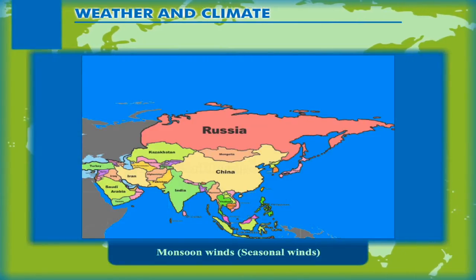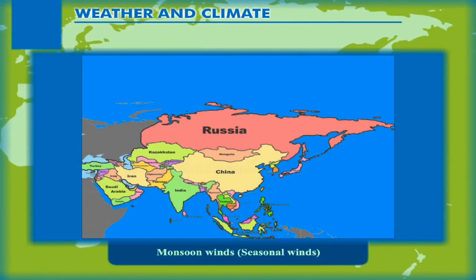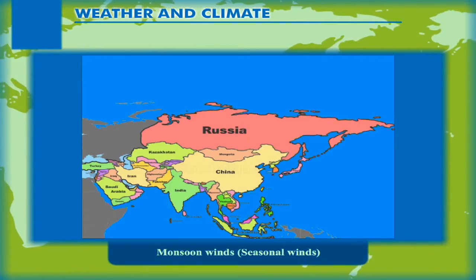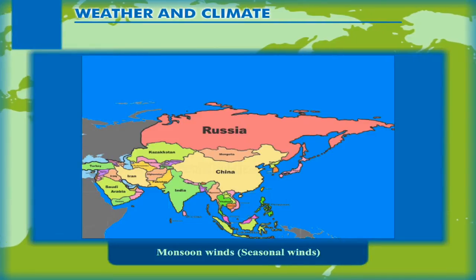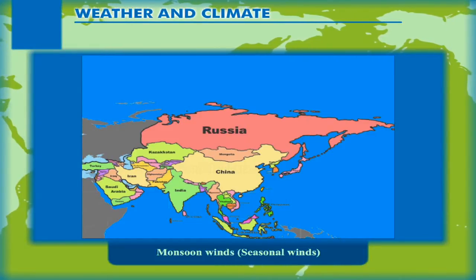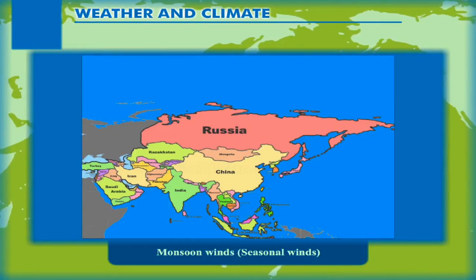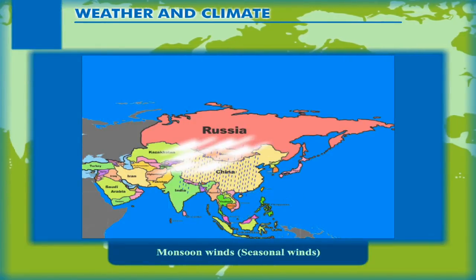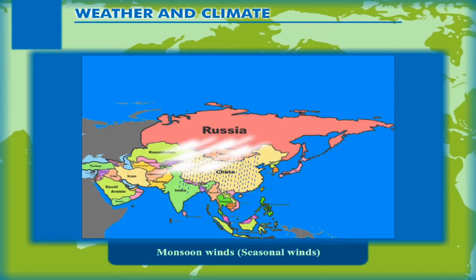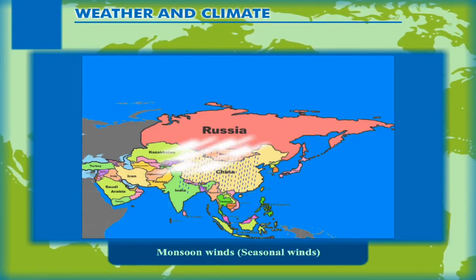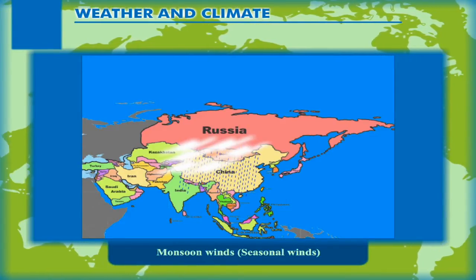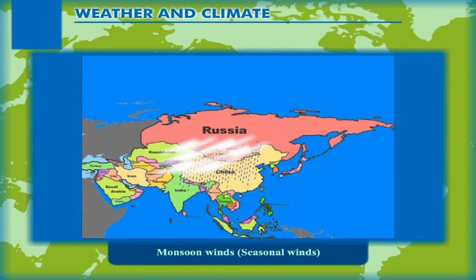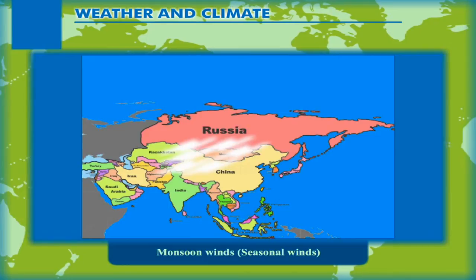During summers, the landmass heats up rapidly and an intense low pressure area develops over Central Asia, which attracts the winds from the high pressure area. As a result, the southeast trade winds cross the equator and bring heavy rainfall to large parts of Asia. These are known as summer monsoons or advancing monsoon.